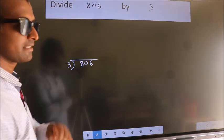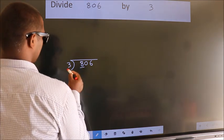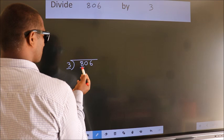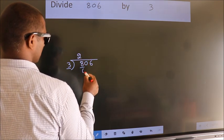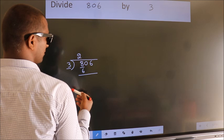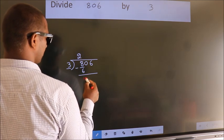Next. Here we have 8, here 3. A number close to 8 in 3 table is 3 times 2, 6. Now we should subtract. We get 2.